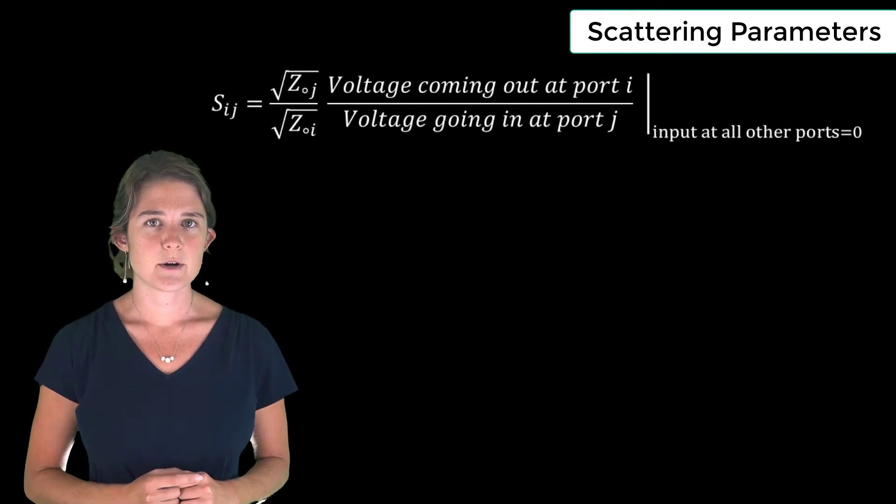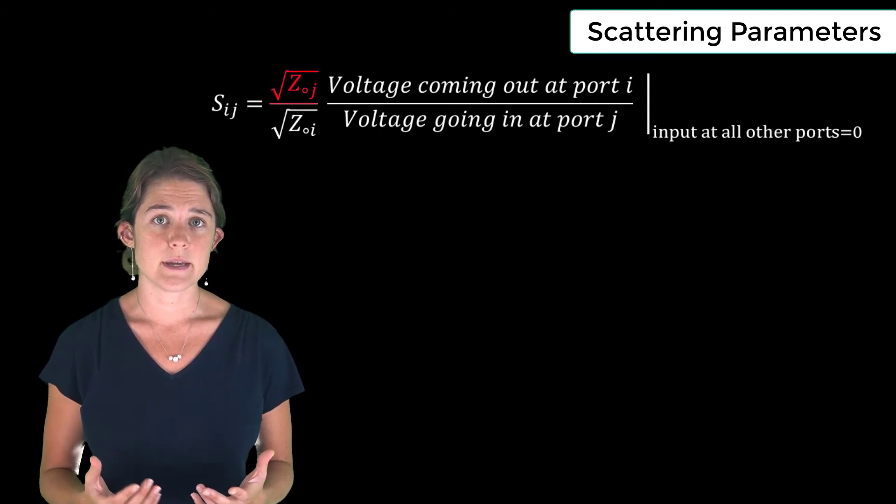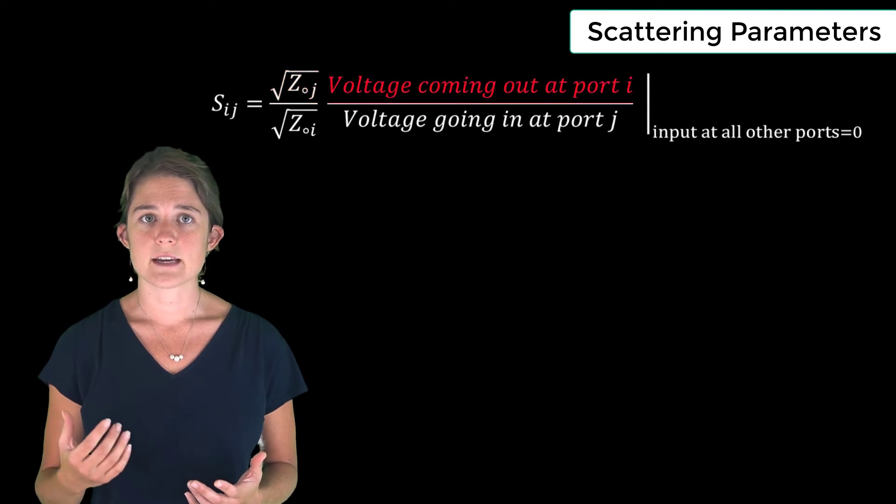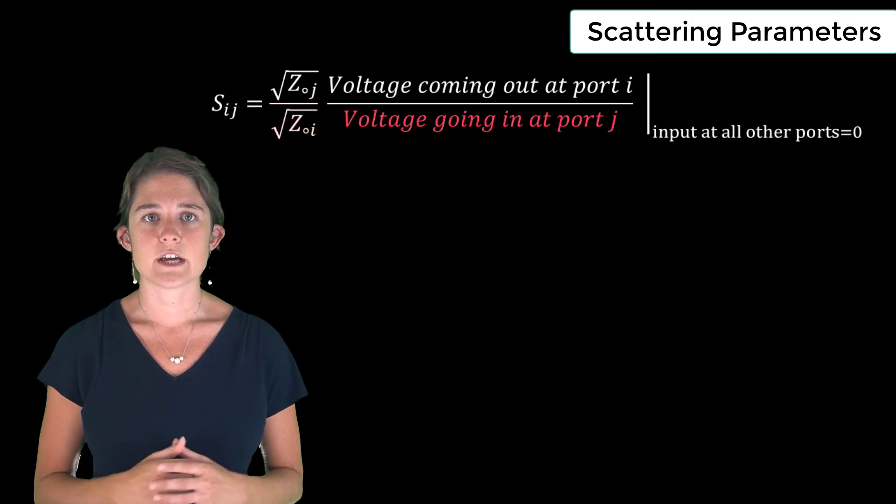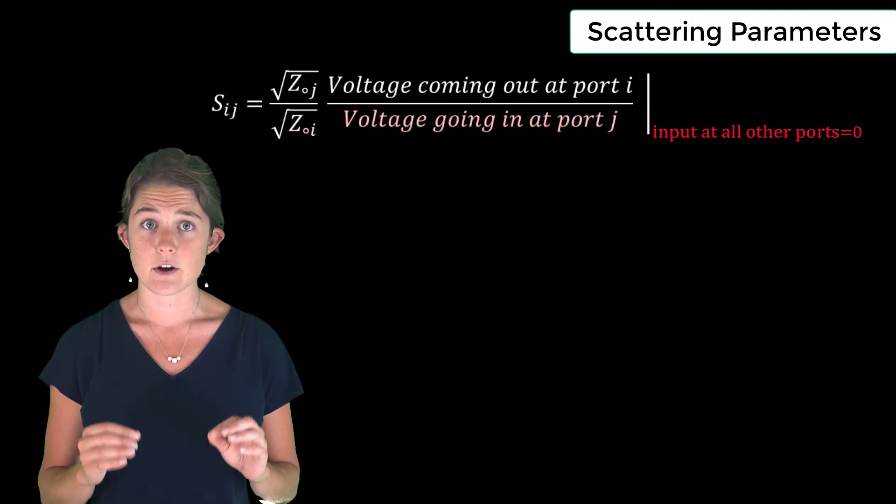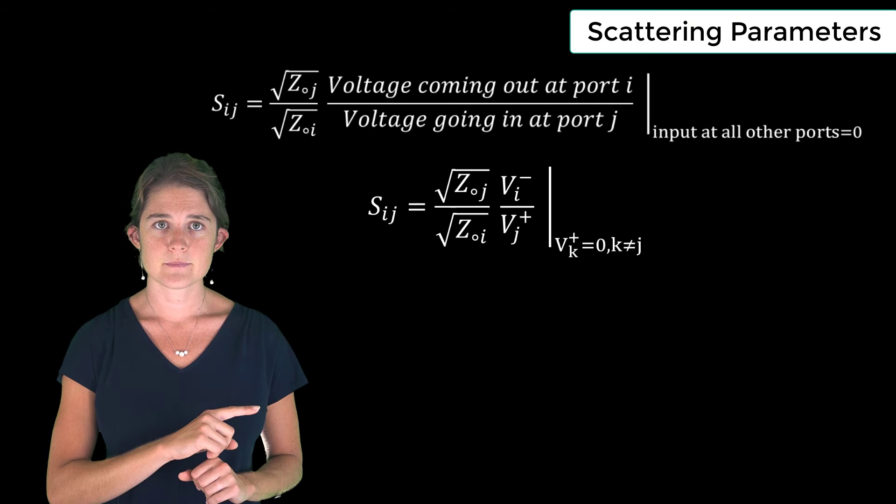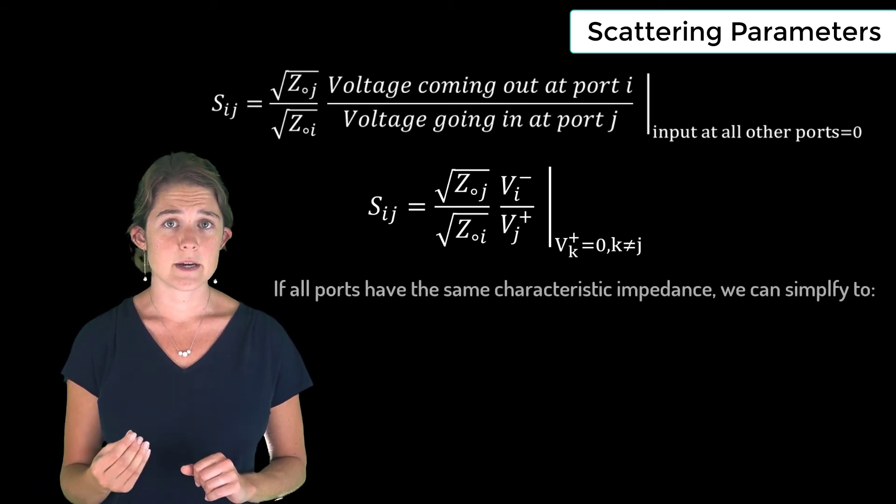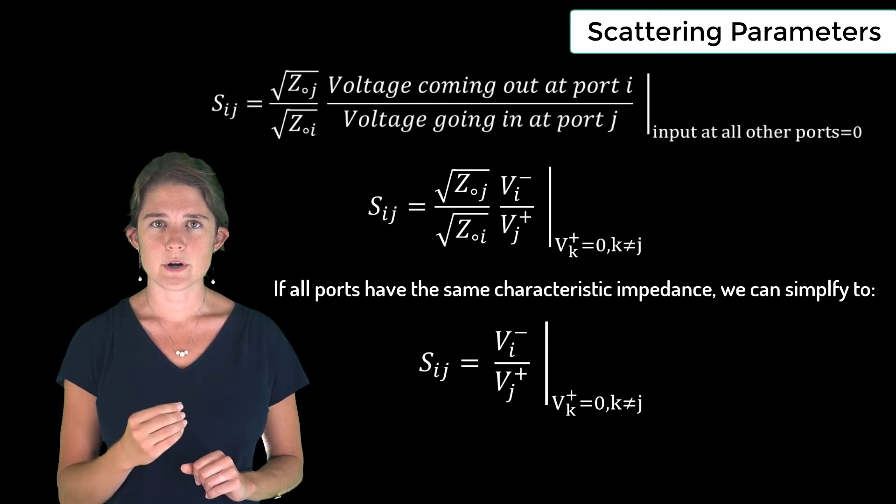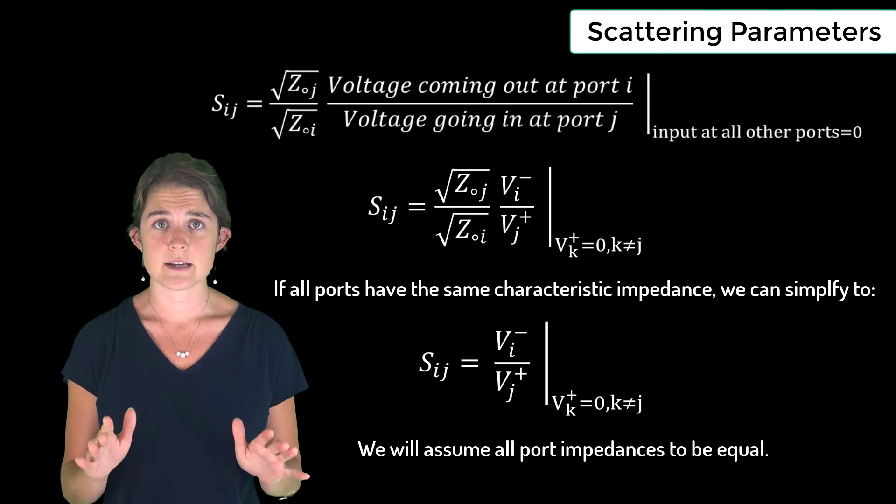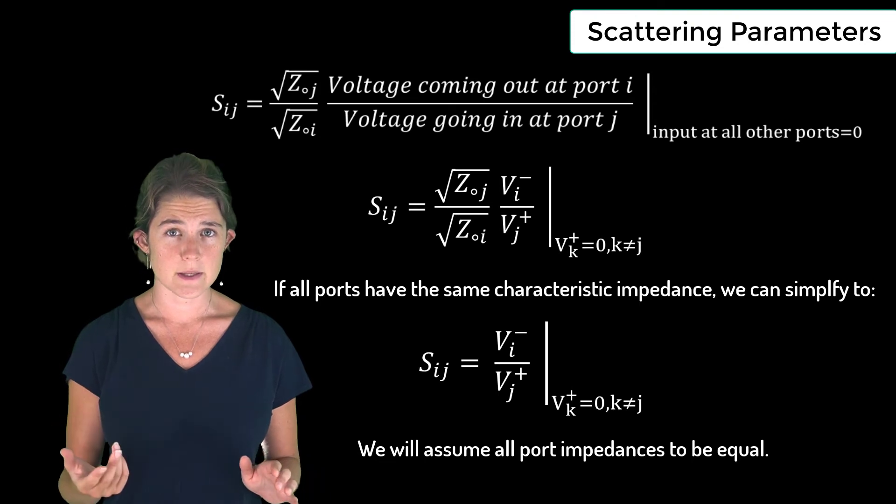This is the general equation for the S-parameter element Sij. It is equal to the square root of the characteristic impedance at port i times the voltage exiting port i, divided by the square root of the characteristic impedance at port j times the voltage entering port j, assuming that the input at all other ports is zero. This can also be written purely symbolically like this. Note that if all ports have the same characteristic impedance, this expression simplifies to this. Moving forward, we will make the assumption that systems use standardized characteristic impedance that is equal at all ports. In real life, this is usually the case, but not always.